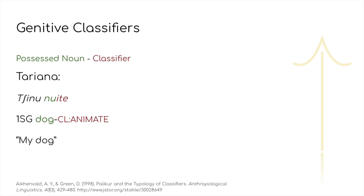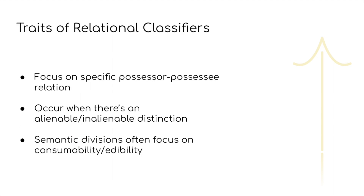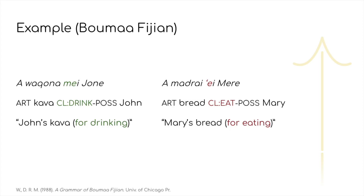Now we have some more obscure classifier constructions. Genitive classifiers are used to specifically characterize a possessed noun in much the same way as noun classifiers. These are contrasted with relational classifiers, which also occur in possessive phrases. The key distinction here is that while genitive classifiers categorize the possessed noun, relational classifiers specify the particular relationship between the possessor and possessee. These tend to occur in languages that distinguish between alienable and inalienable possession, and almost always just occur with alienably possessed nouns. The semantic divisions here are also rather different, distinguishing between consumability or edibility of the possessed by the possessor, with non-consumables characterized by how the possessor acquired or owns the noun, and consumables on how exactly they're consumed.